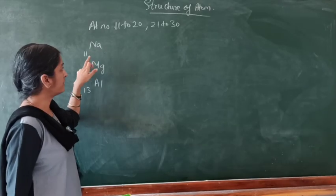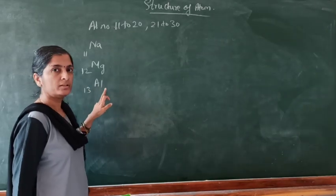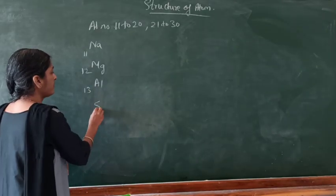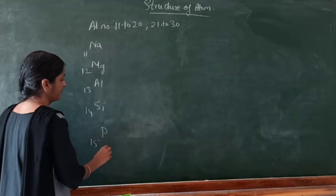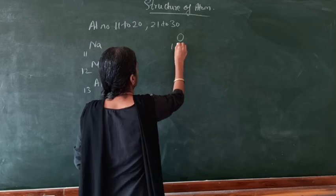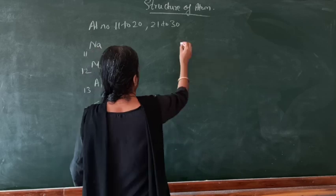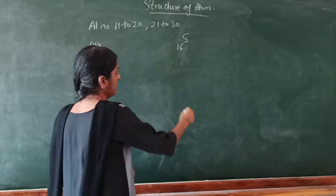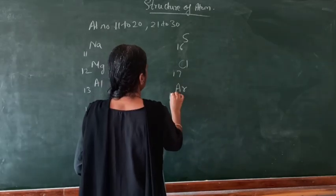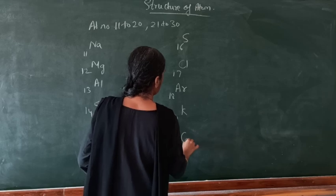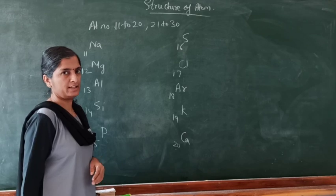Element with atomic number 11 is sodium. Atomic number 12 is magnesium. Atomic number 13 is aluminium. Atomic number 14 is silicon. Next, phosphorus, sulfur, chlorine, argon, potassium, and calcium. We shall discuss the electronic configuration of these elements.